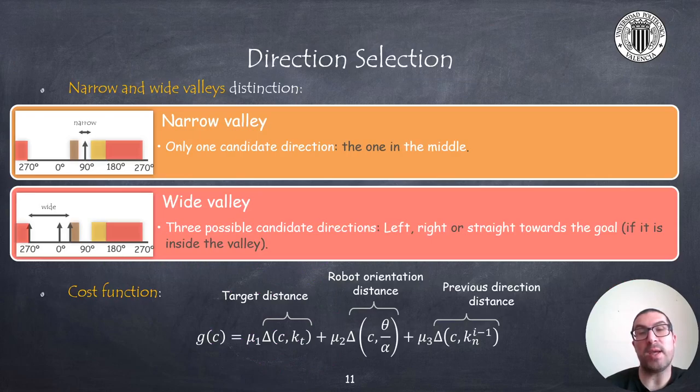So once we have the masked histogram, we can detect the valleys, which are basically a set of sectors marked as free sectors. And we make a distinction between what we call narrow valleys and wide valleys. A narrow valley represents a region in which the robot can pass through, but it's surrounded by obstacles, and therefore there's only one possible direction, which is to pass through the middle of the valley. On the other hand, we have a wide valley, which represents a region with obstacles far away from the robot. In this case, we usually can take the decision or the candidate decisions to move through the left or the right edges of the valley as candidate directions. Although it could happen also that the target direction is within the valley, and in that case, we also consider that direction as a candidate direction, obviously.